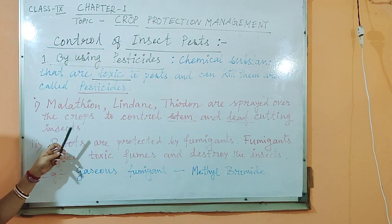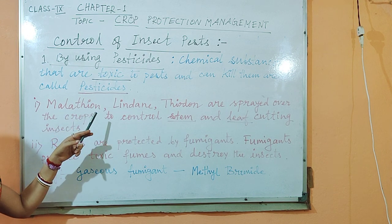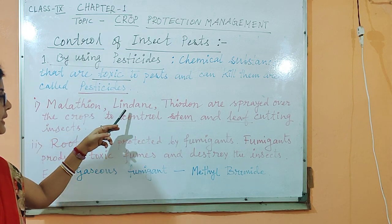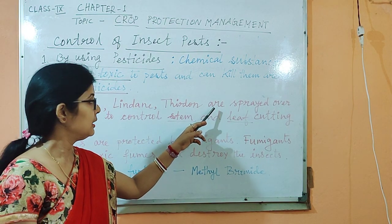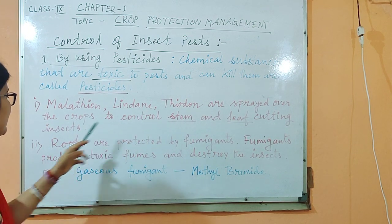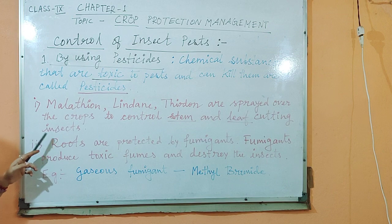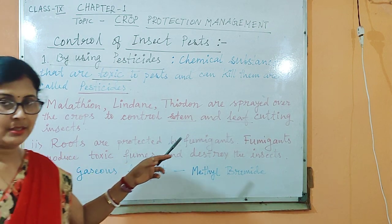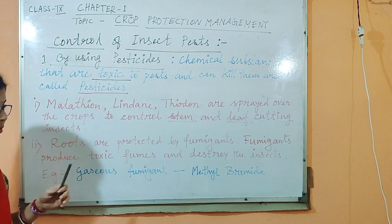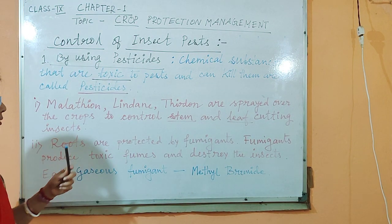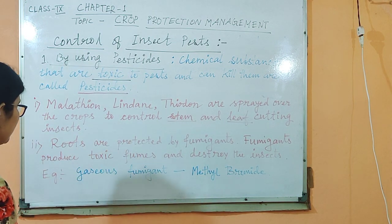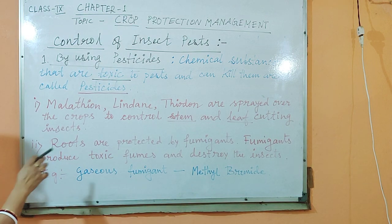Common pesticides: malathion, linden, thardon — you have to write down and learn the names. These are sprayed over the crops to control stem and leaf cutting insects. Malathion, linden, and thardon are the common ones sprayed through a sprayer over the growing crops for killing stem insects, leaf insects, and cutting insects. Roots are protected by fumigants.